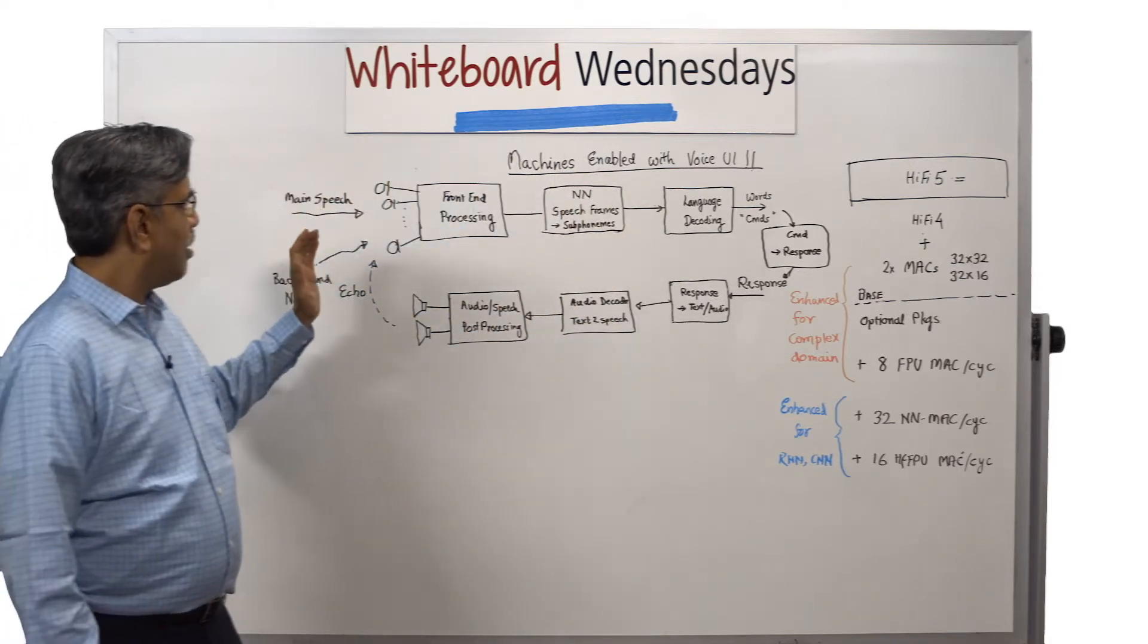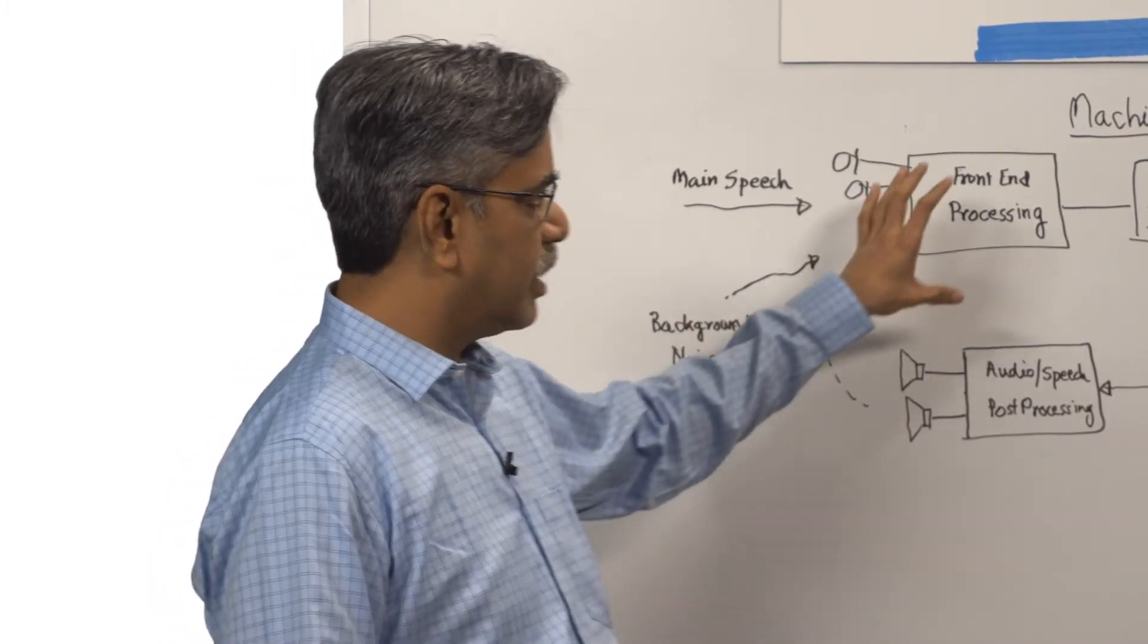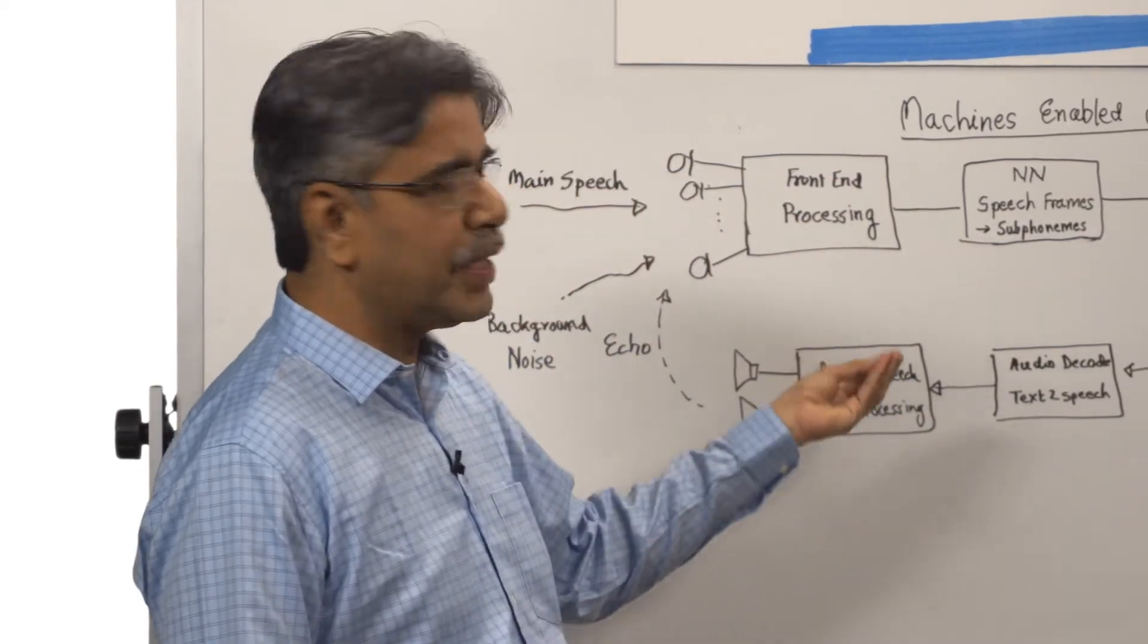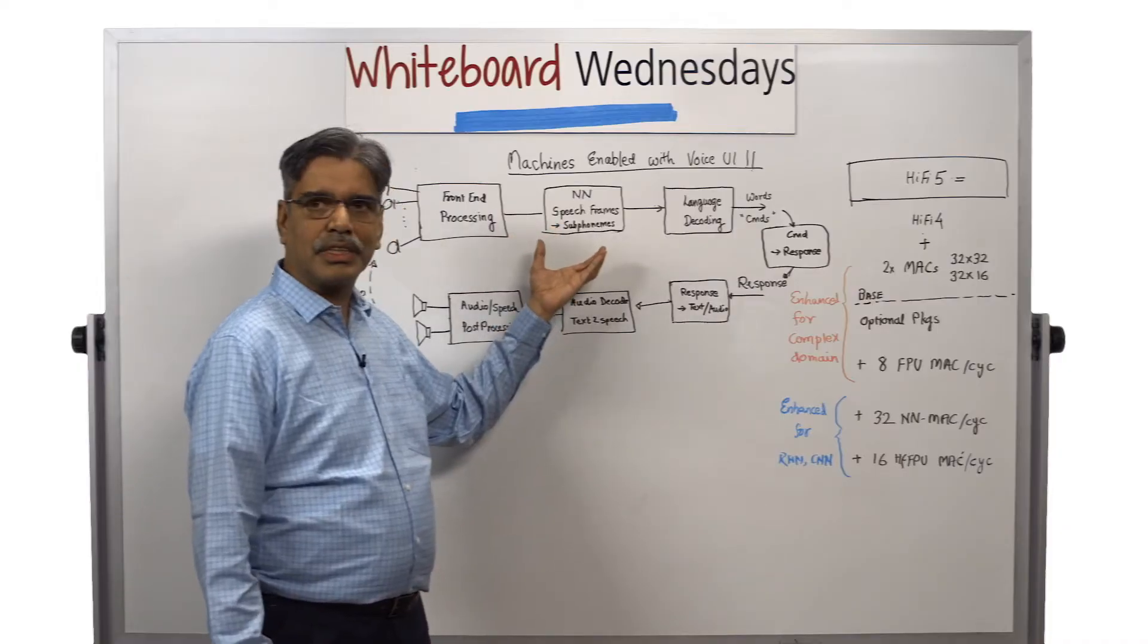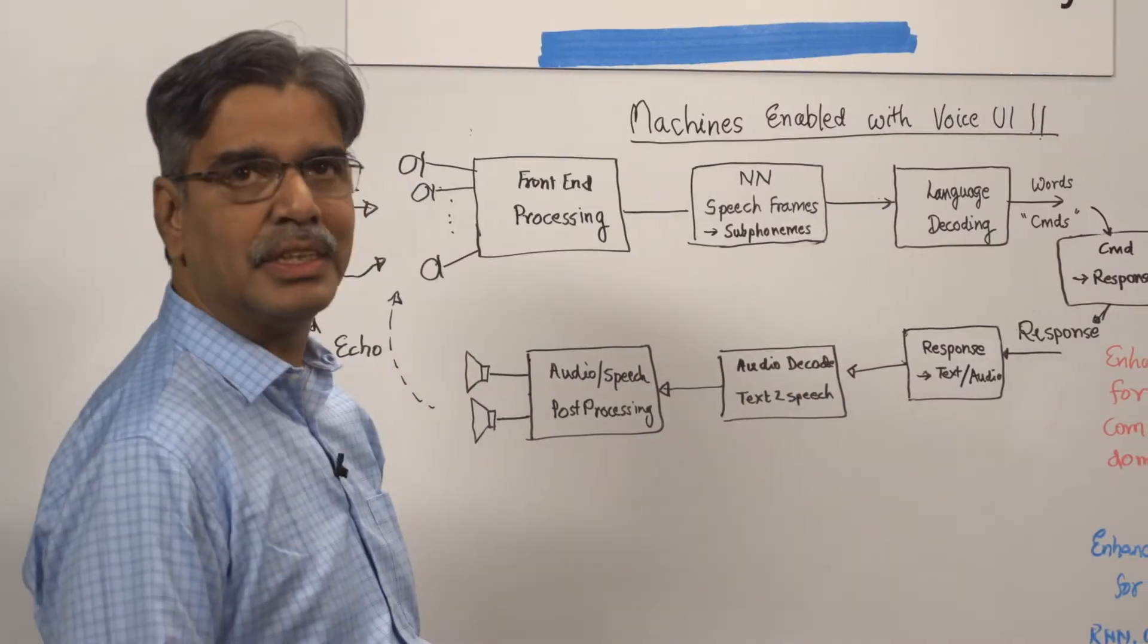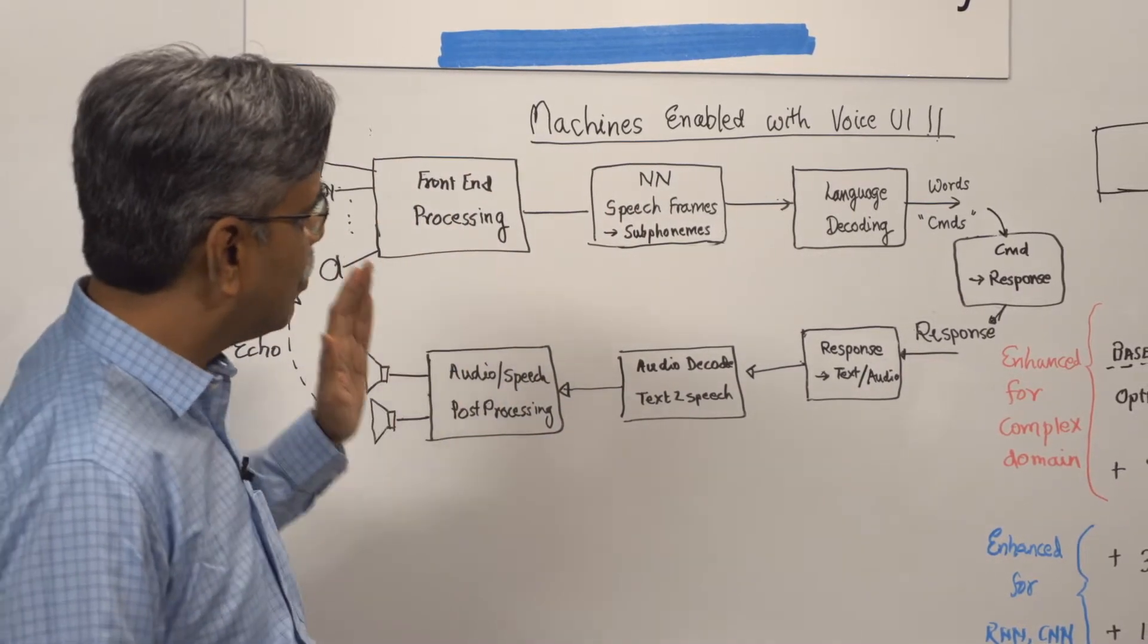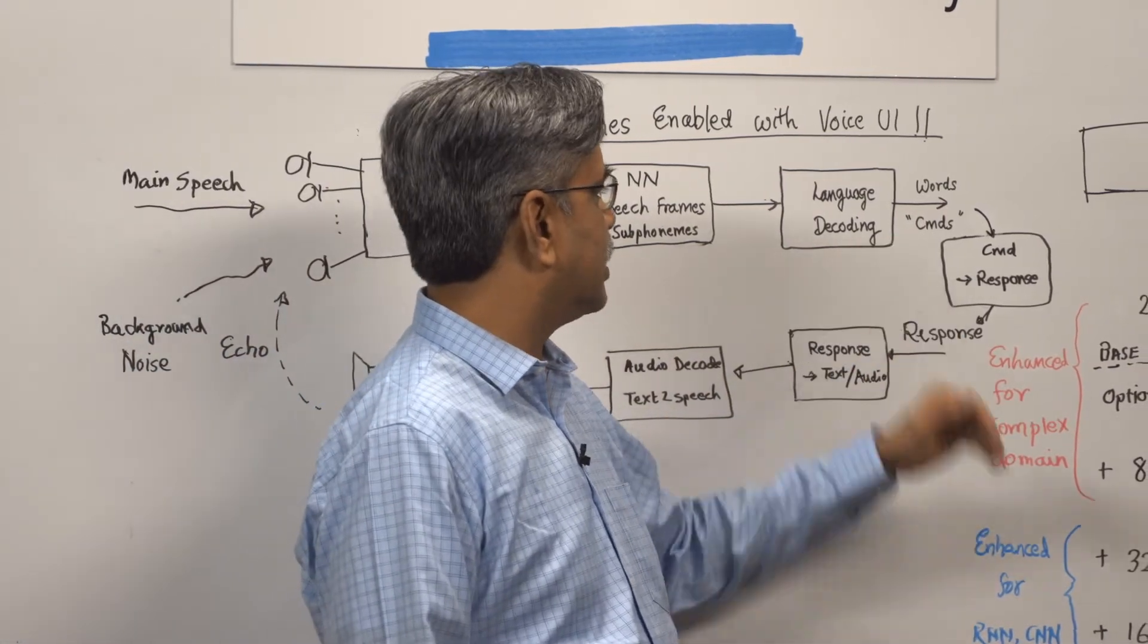What happens is that it picks up the main speech, it does the front-end signal conditioning to clean up the speech, form mono speech frames, and those speech frames using neural networks are mapped into sequence of phonemes or sub-phonemes. Those sub-phonemes are then fed to a language decoding module which will convert the sequence of sub-phonemes into words and commands.